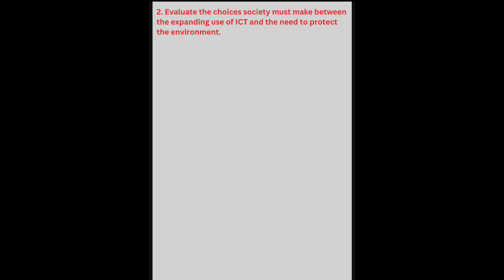To make ICT better for the environment, we can do a few things: use different power sources, recycle materials, and reuse devices. This reduces the need to create new devices. We can also educate people on how to properly dispose of digital devices. ICT can also help the environment — for instance, we can use it to track animals and protect them, and to monitor environmental issues such as climate change through weather apps.